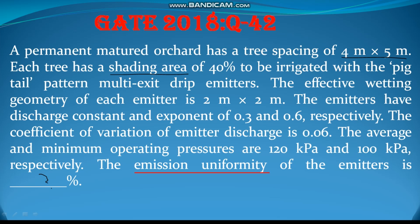Emission uniformity is a relative index of the variability between emitters in an irrigation block. If it is an orchard crop, the orchard crop is irrigated as a block — a system is developed and it is irrigated as a whole garden.